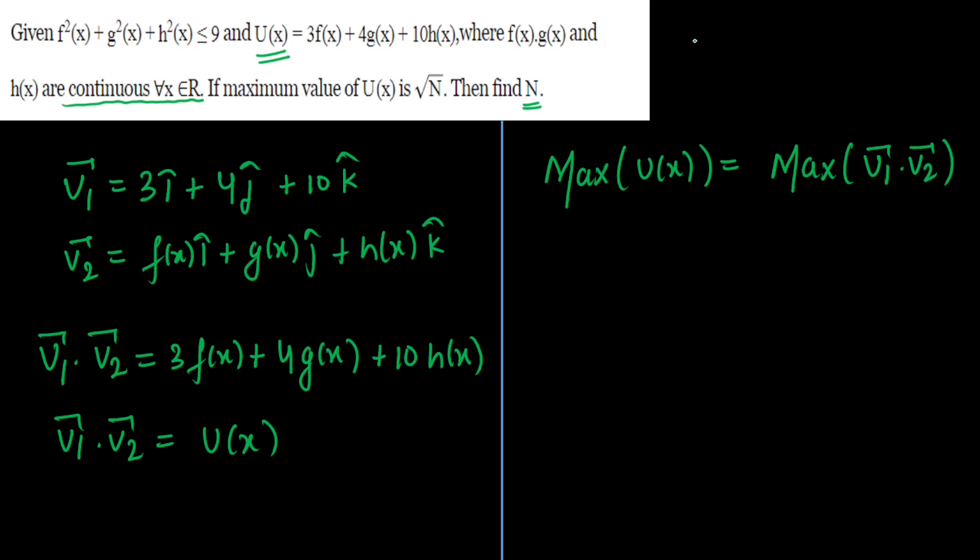Now I can write v₁·v₂ as equal to |v₁| × |v₂| × cosθ. Let's calculate the maximum of v₁·v₂. Maximum of v₁·v₂ will be - we have to calculate |v₁|, |v₂|, and maximum of cosθ is 1. So we have to calculate maximum of |v₁| × |v₂|.